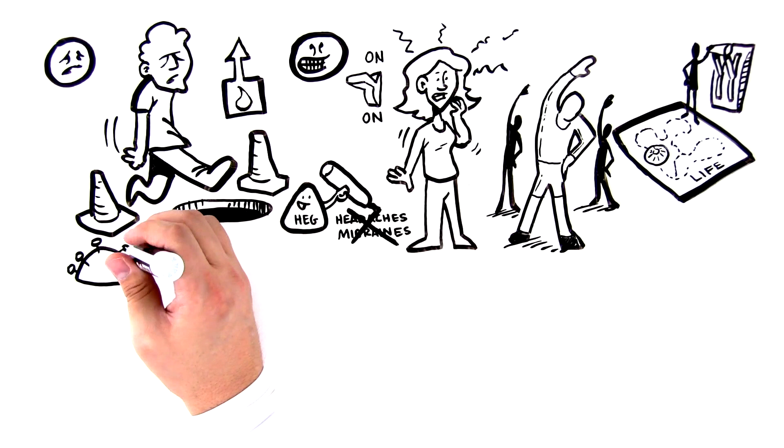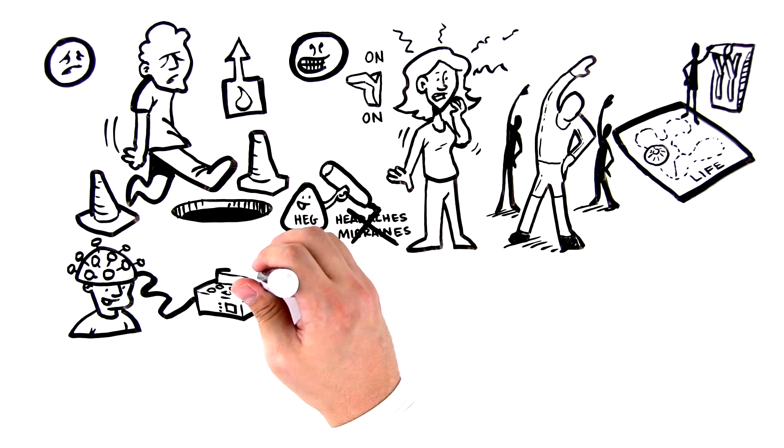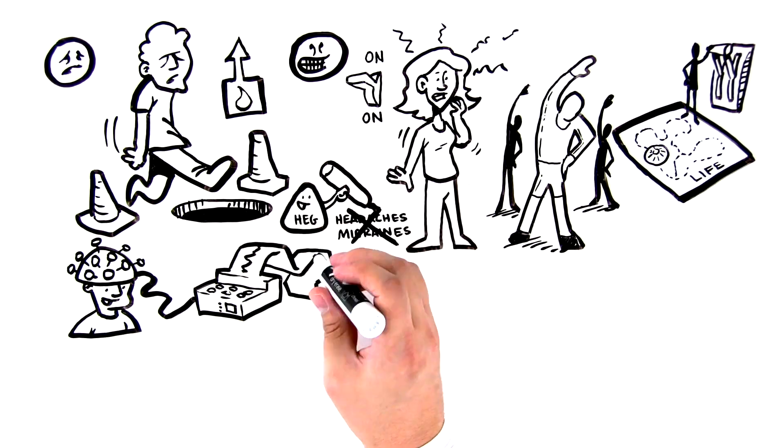EEG is more individualized. Brain Trainer's TQ7 assessment identifies electrical habits that separate your brain from the peak brain.